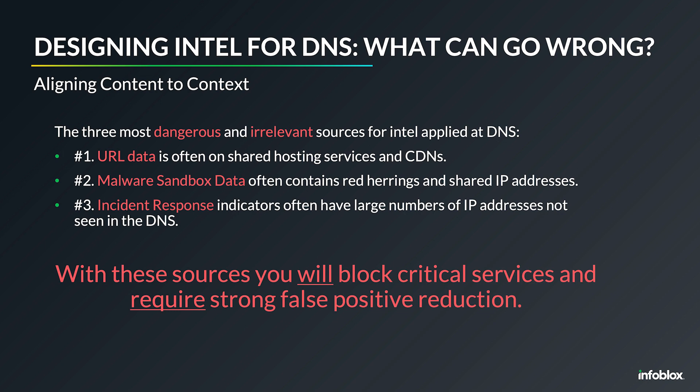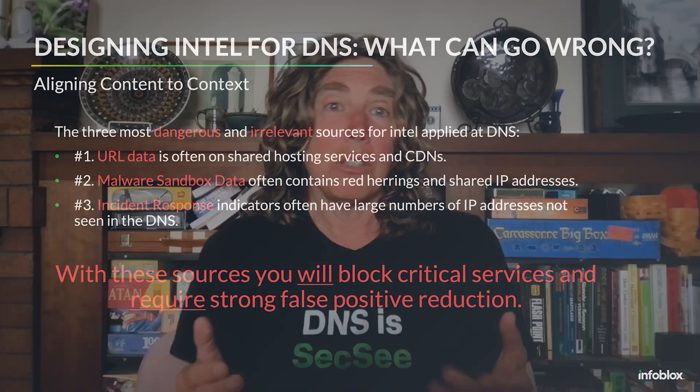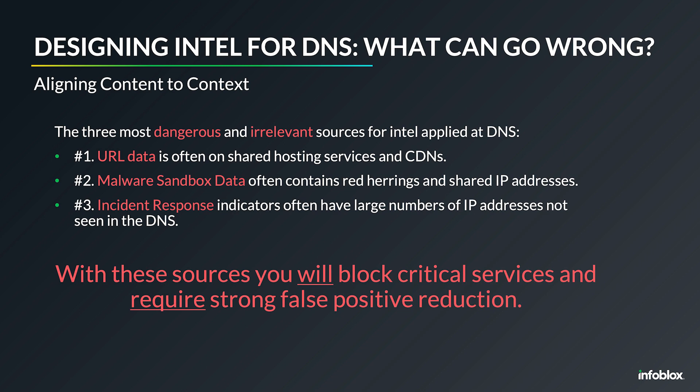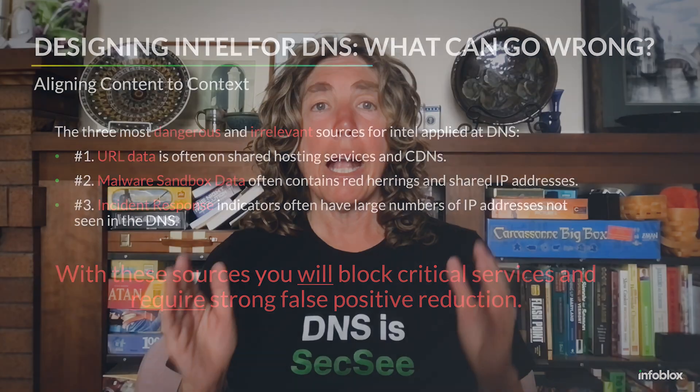A lot of malware calls out to important and common services, so you will find very common domains in malware-based intel. If you look up Google on VirusTotal, for example, you will see it is marked as malicious by a large number of vendors. The third problem is incident response data — the primary issue is it's generally not relevant to DNS at all, largely because attackers are usually coming from a network IP address that doesn't resolve to a domain. But sometimes it has the same problems as URL and malware data — the domain may actually be important for the network. If you block these domains, you will have a problem. Taking an aggregation strategy tends to aggregate these three popular but problematic sources, making aggregation very likely to cause a problem with your network performance.